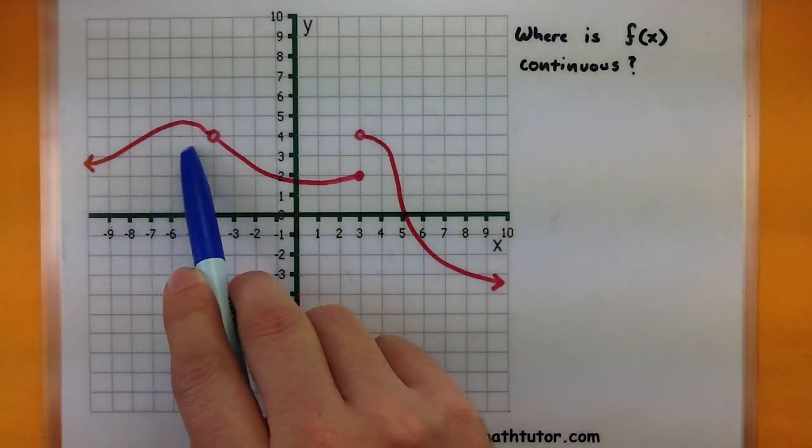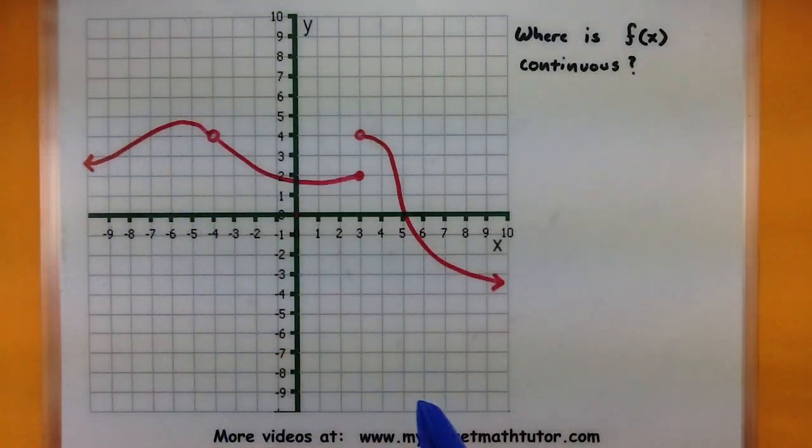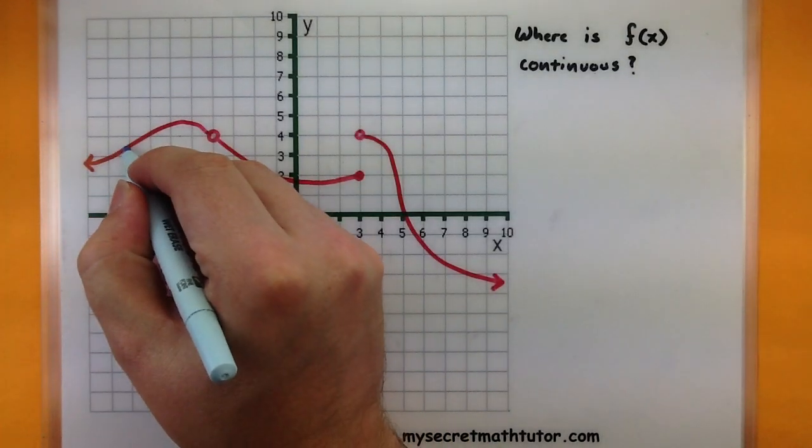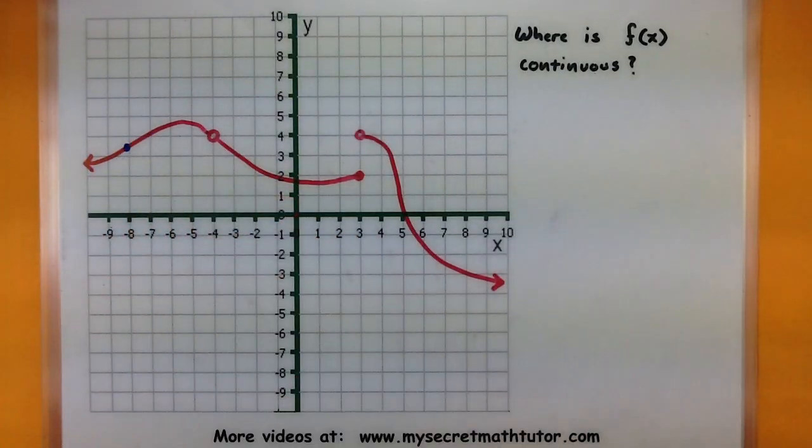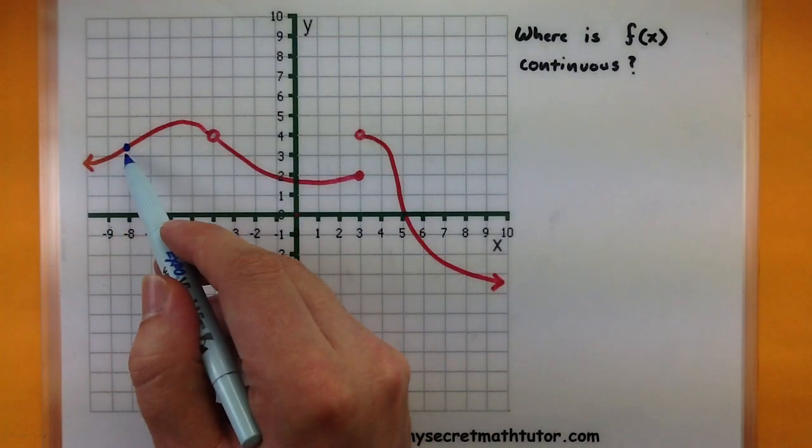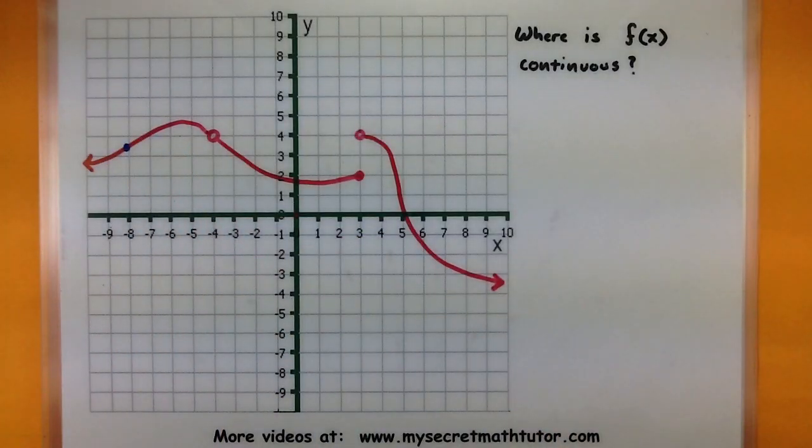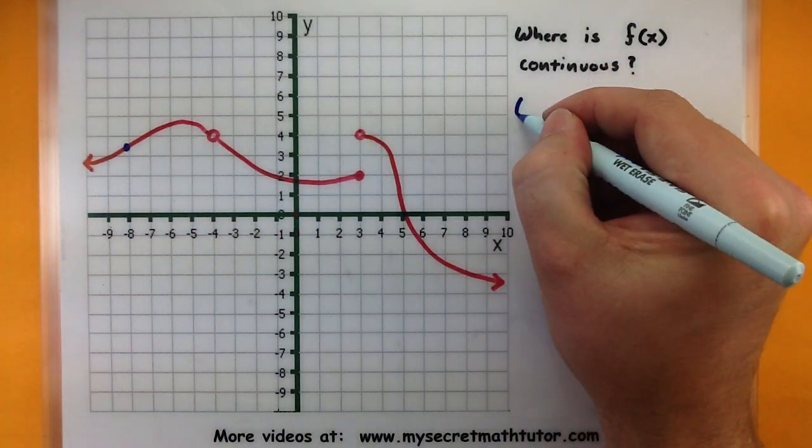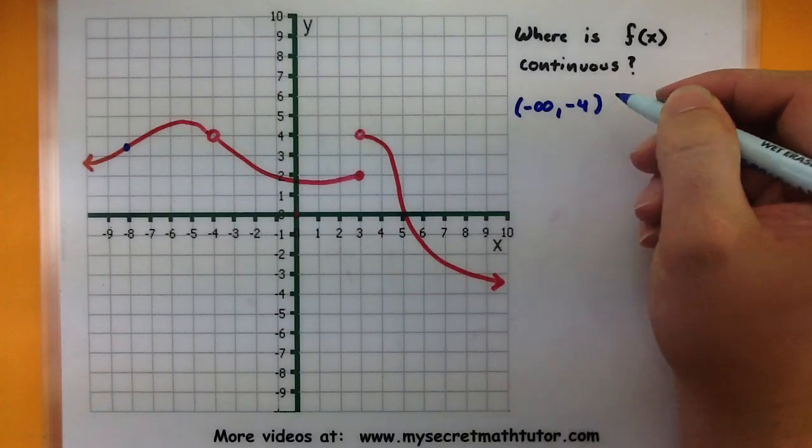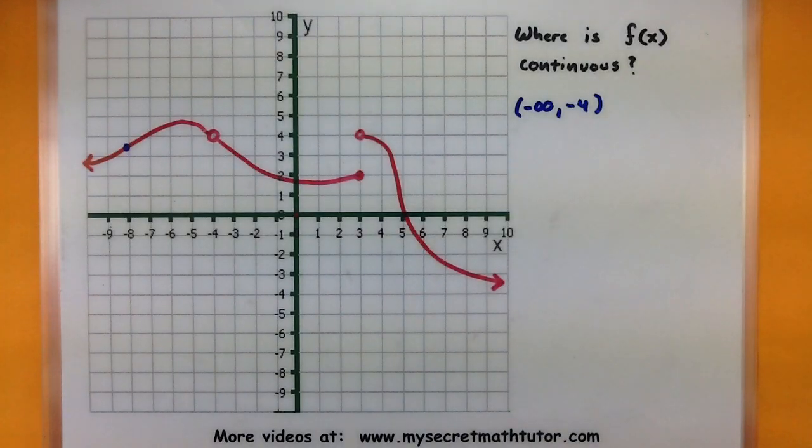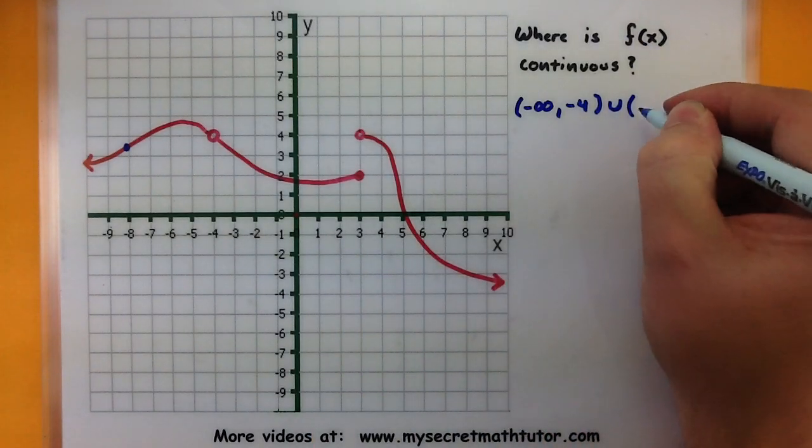Notice how on this little section right here as long as I don't go to that little open circle there that this section has no breaks no gaps in it. It fits the definition because no matter what point I choose in here I can get a value, the limit exists at that value, and I can do that for every single point on that little interval. So we can say that this thing is continuous from negative infinity all the way up to the hole at negative 4. Now that's not the only place it's continuous.